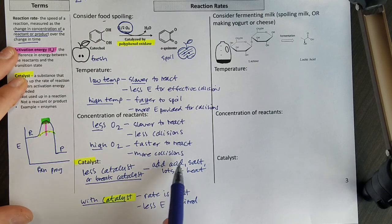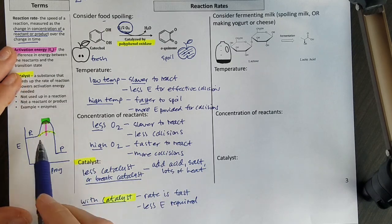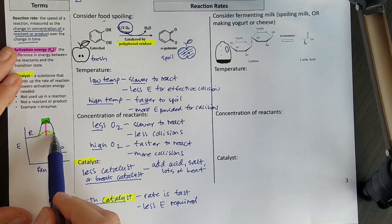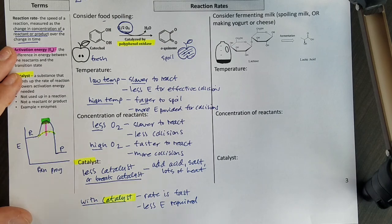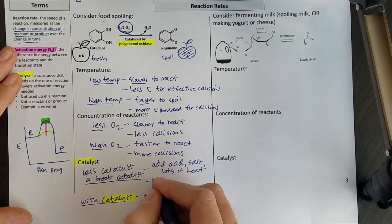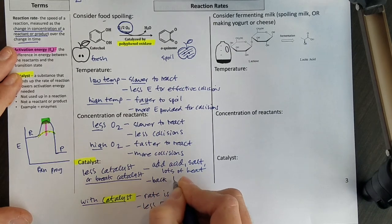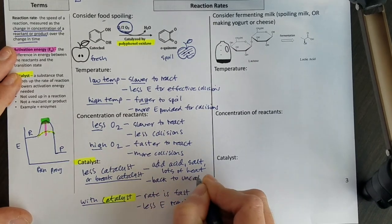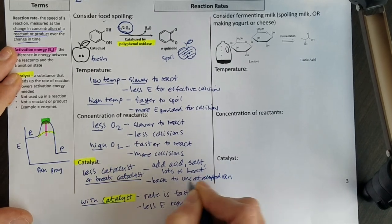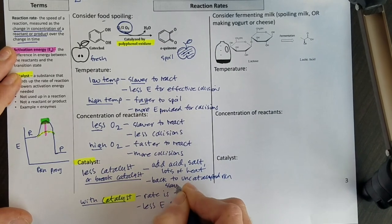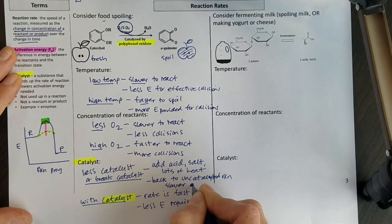So once all of those break my catalyst, instead of it being an easy reaction, that goes away, and now it requires a lot of energy for the reaction to happen. So I go back to my uncatalyzed reaction, and that means that it is a slower reaction.